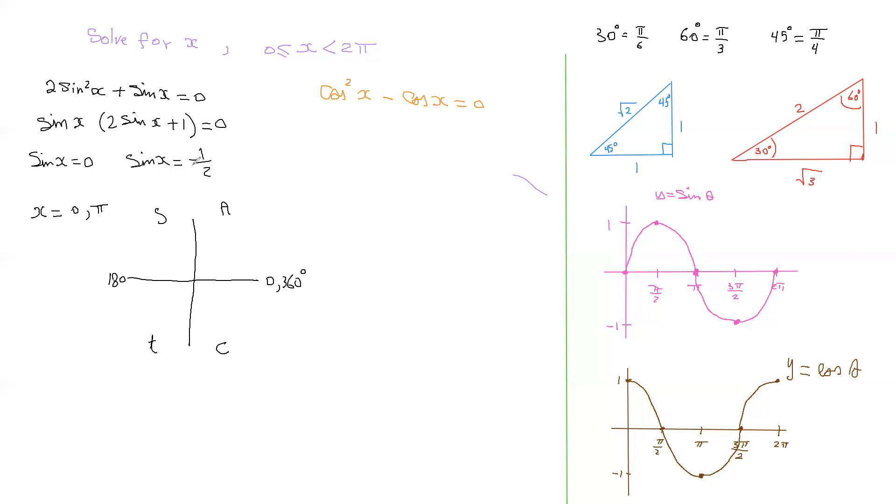We have sine x equals negative one half. The negative indicates that I'm in quadrant three and quadrant four. These are the quadrants. Three and four. The sine is negative, so therefore it's in the third and fourth quadrant, since all of them are positive. The sine would have been positive here, and only the sine is positive here.